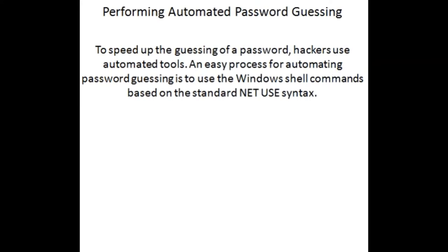To speed up password guessing, hackers use automated tools. An easy process for automating password guessing is to use Windows shell commands based on the standard NetUse syntax to create a simple automated password guessing script. The steps are: first, create a simple username and password file using Windows Notepad — automated tools such as dictionary generators are available to create this word list, and save the file as C:\credentials.txt. Then pipe this file using the for /F tokens command with NetUse to use the credential file and attempt to log on to the target system's hidden share.